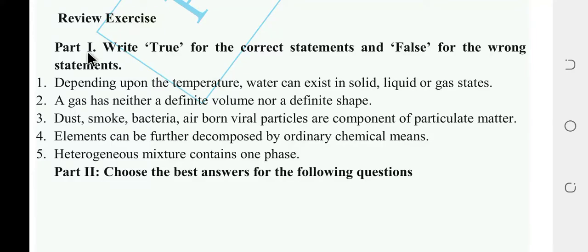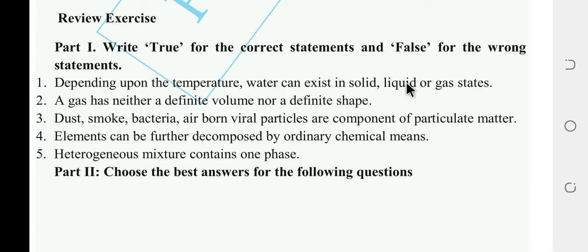Okay, review exercise. Write true or false for the correct statement and false for the wrong statement. Question number one: depending upon the temperature, water exists in solid, liquid, or gas state — the answer is true. For example, matter like water or solid mercury, because gas has neither definite volume nor definite shape.